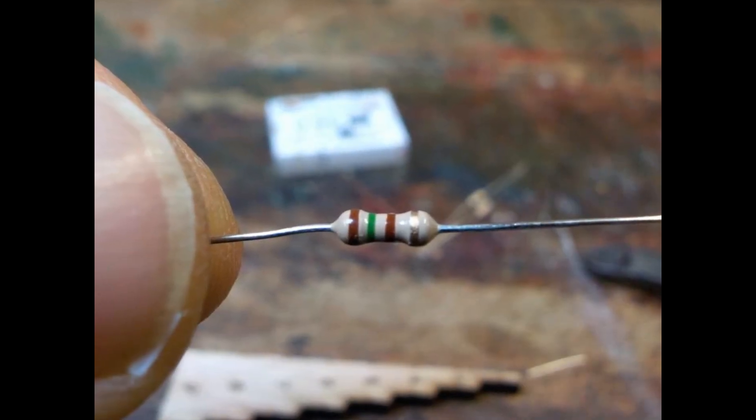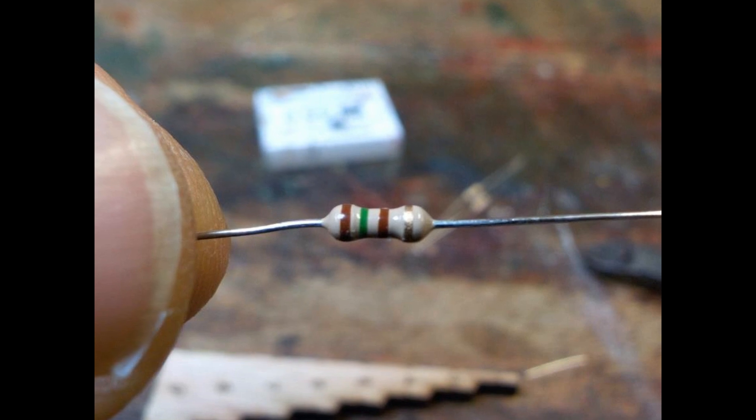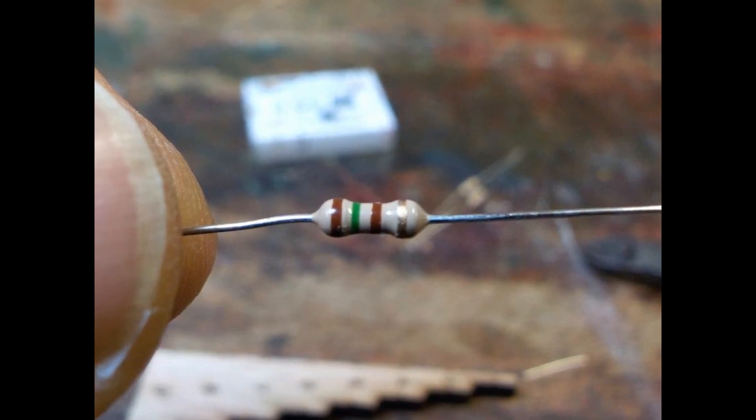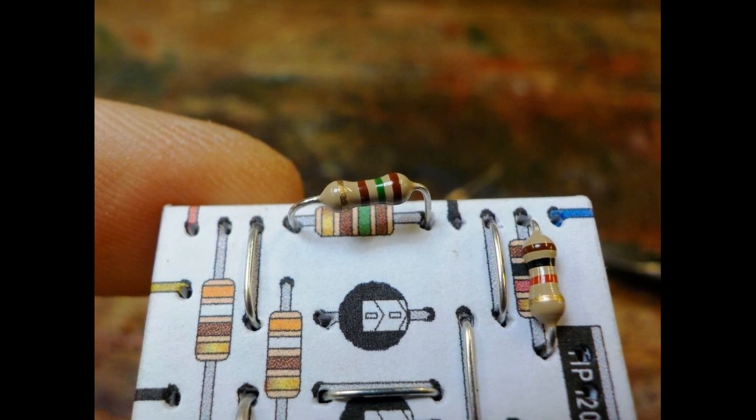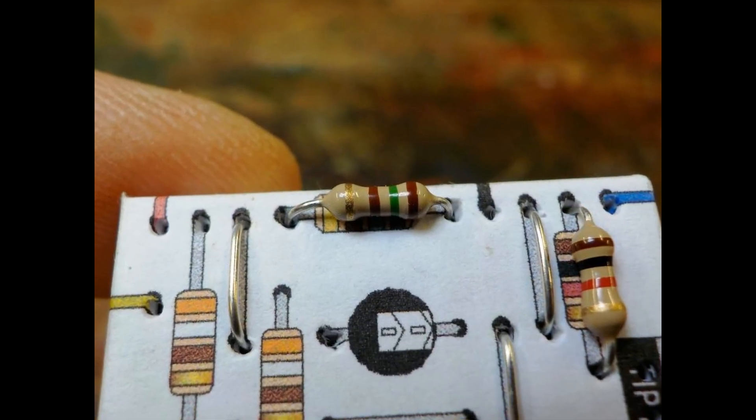The next resistor has a brown, green and brown stripe. So its value is 150 ohms. Do the normal bending and cutting. Line it up and push it in.